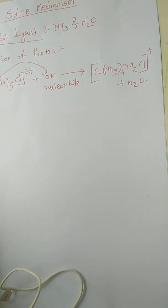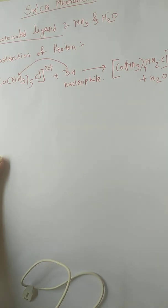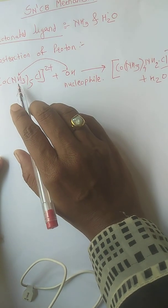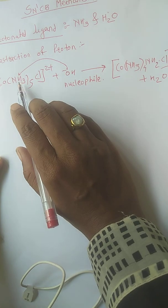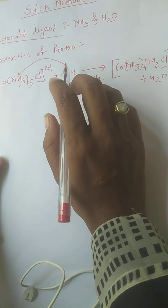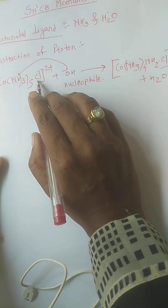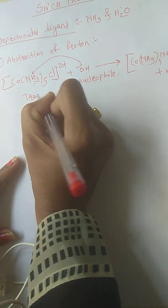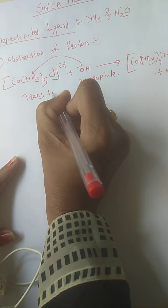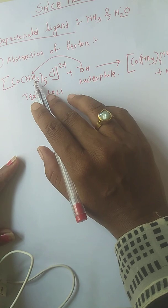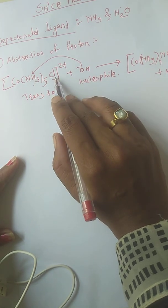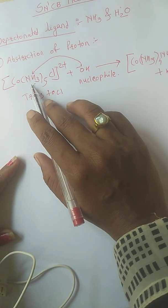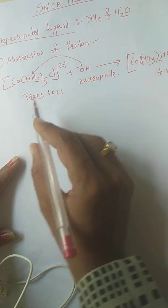Here we are using ammonia as a deprotonated ligand. The ammonia which facilitates the proton is specifically the ammonia which is trans to Cl. This is a necessary condition — the ammonia molecule which is trans to Cl is used to abstract the proton.